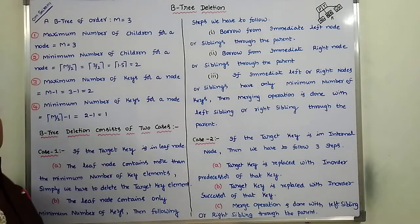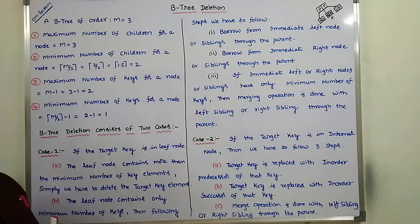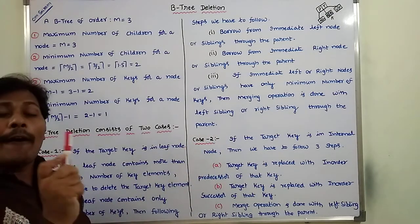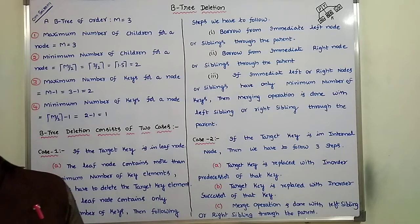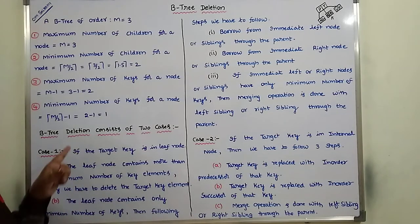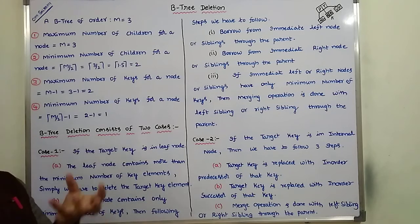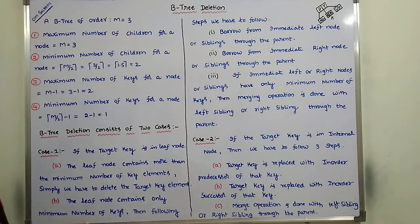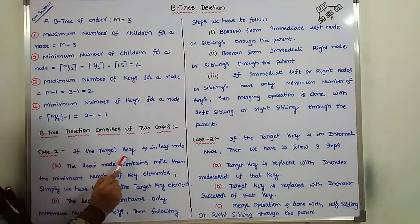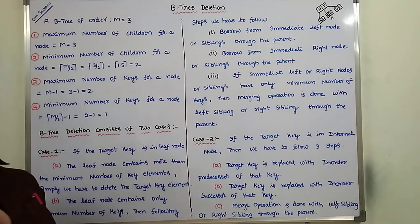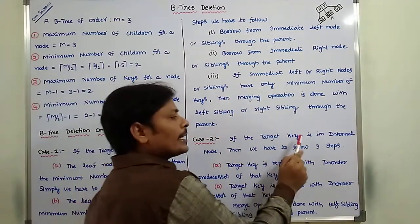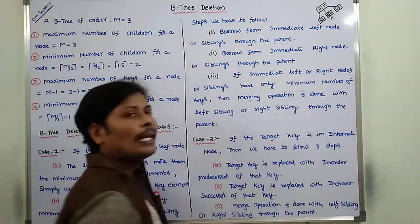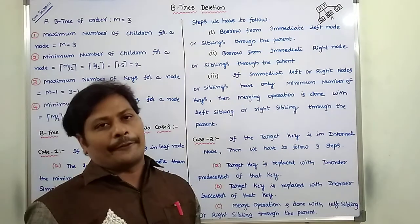B-tree deletion consists of two phases. Case 1 is if the target key is at a leaf node. Case 2 is if the target key is at the internal node. The target key means whatever key element we want to delete. An internal node means it is not a leaf node.